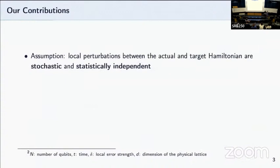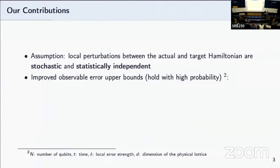This is a brief summary of our contributions. First, we have a slightly different assumption for our local perturbations. The local perturbations we have are assumed to be stochastic and statistically independent between the actual and target Hamiltonian. With this assumption, we're able to obtain improved observable error bounds that hold with high probability. Specifically for any arbitrary observable, we're able to show a quadratic improved scaling of square root of number of qubits, rather than the previous best case of linear in number of qubits.